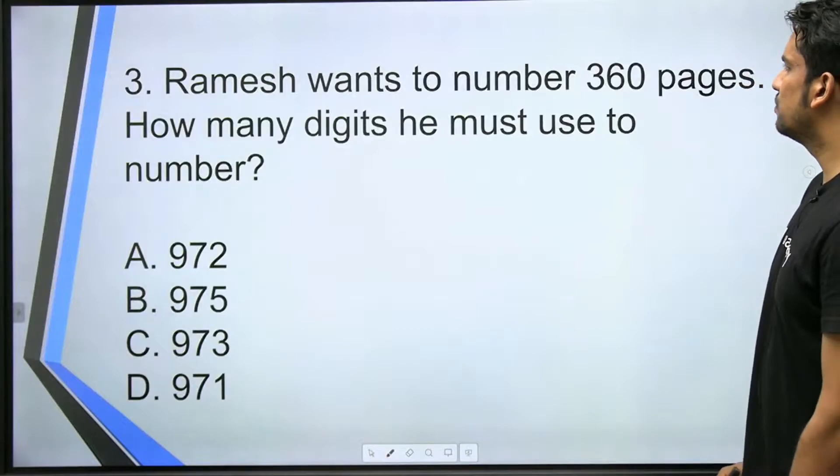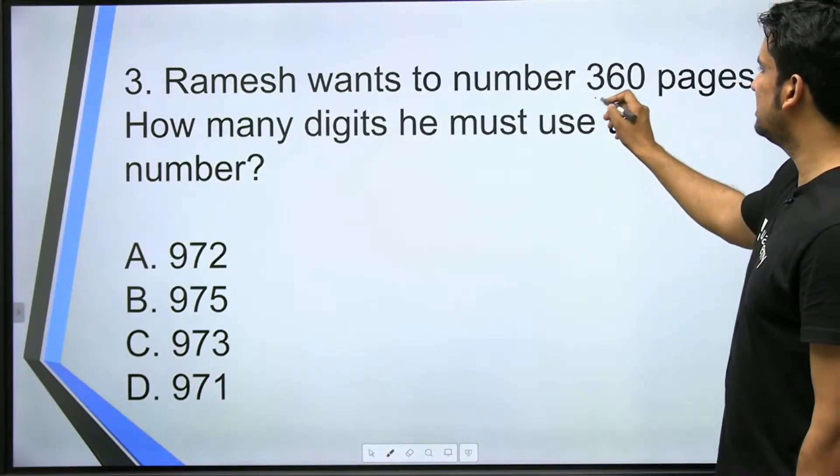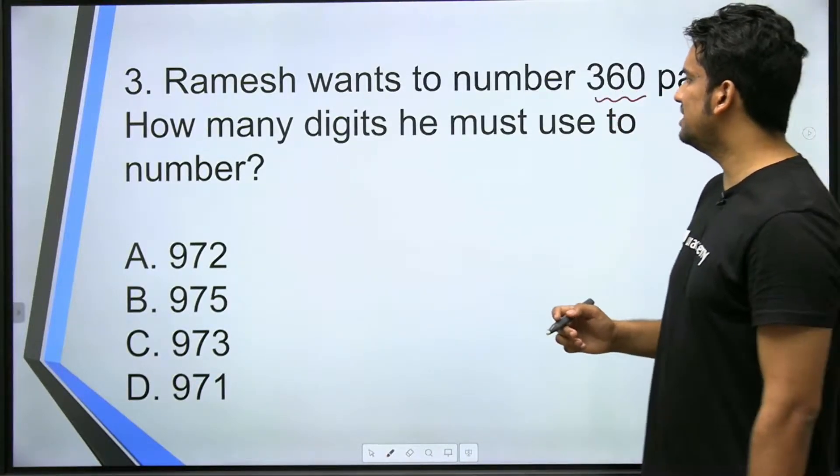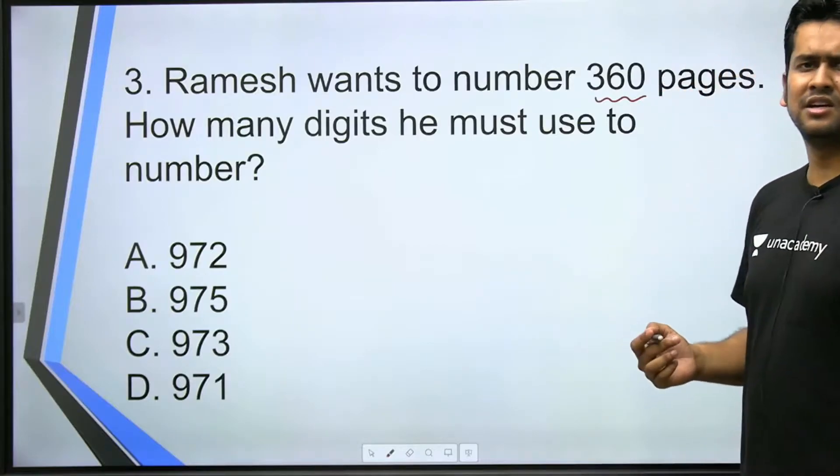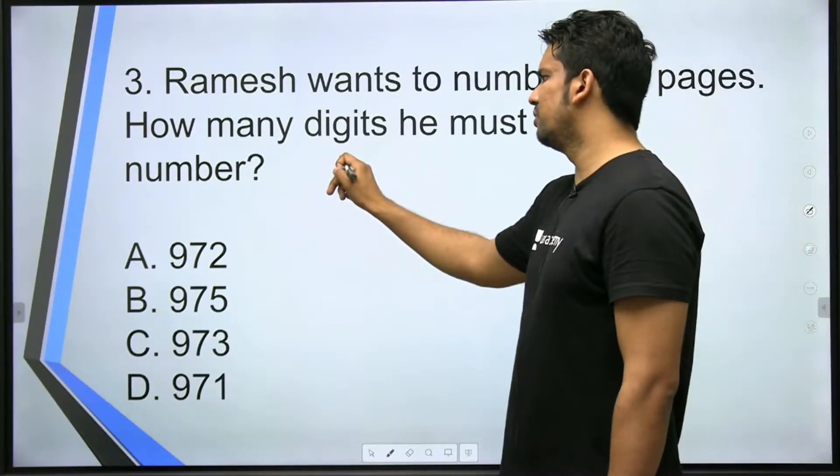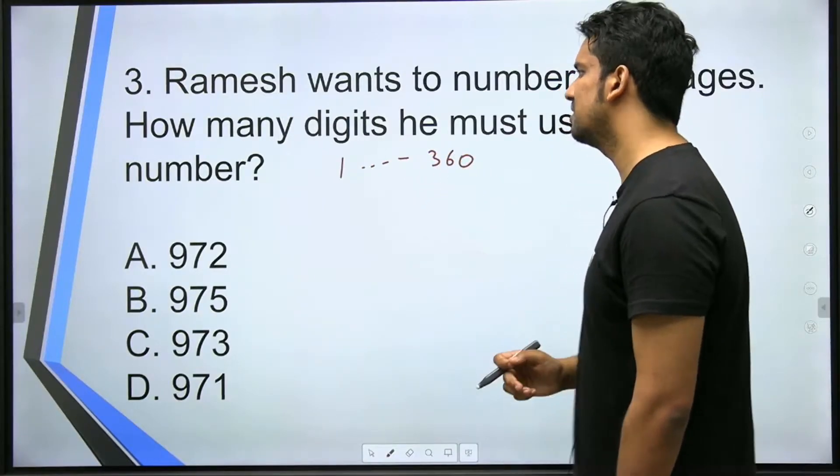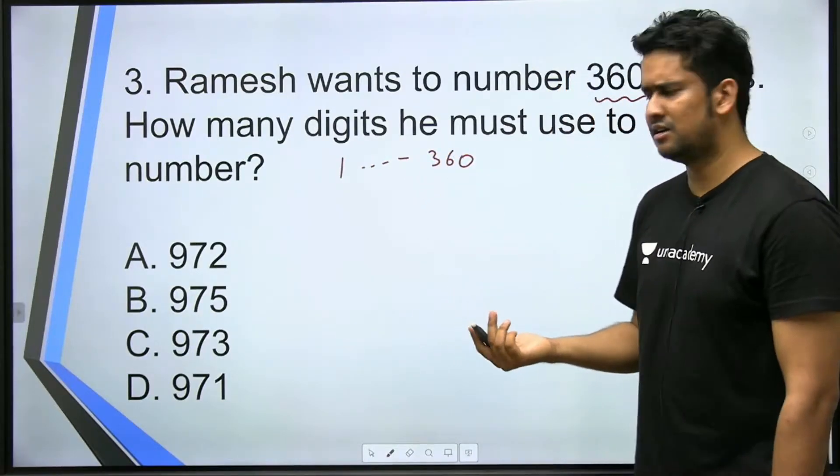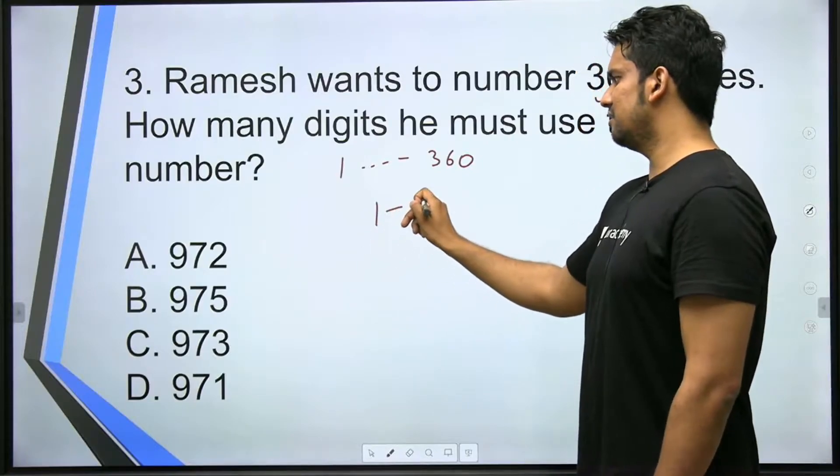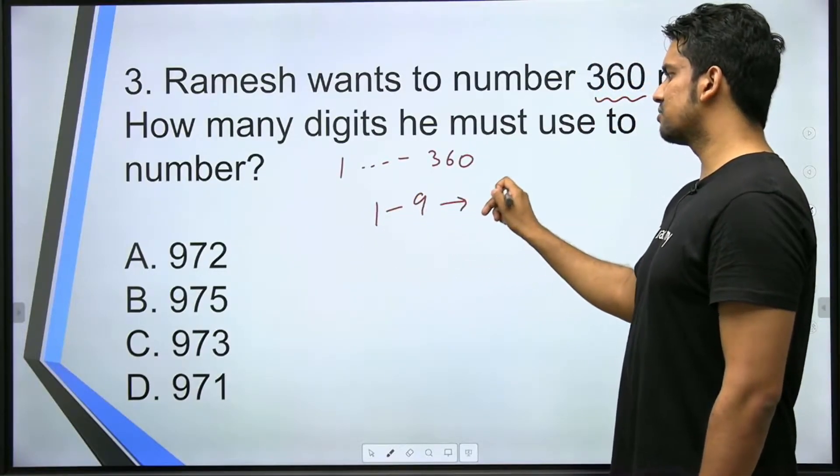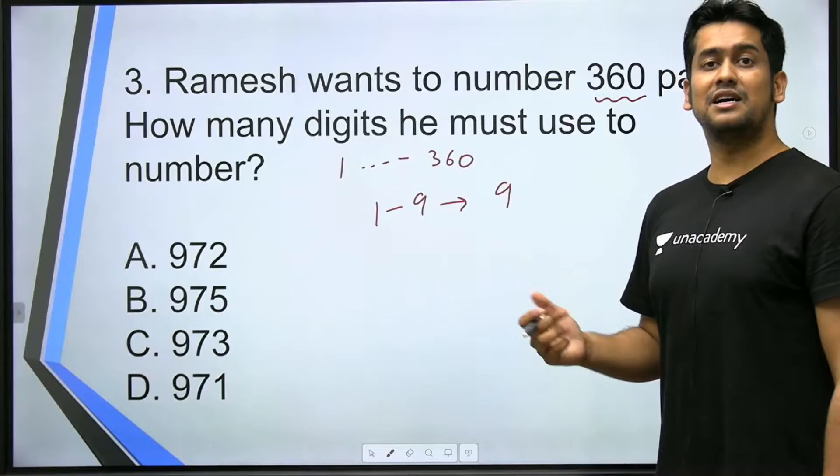Third question. Ramesh wants to number 360 pages. How many digits must he use to number? So basically what he wants to do is write all numbers from 1 to 360. Question is how many digits will he use? So let's divide this. From 1 to 9, he'll need only 9 digits because these are single digit numbers.